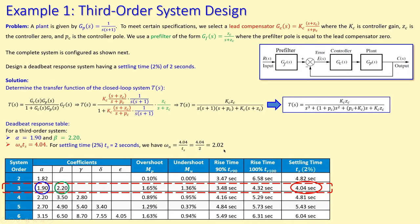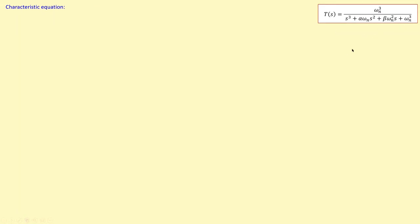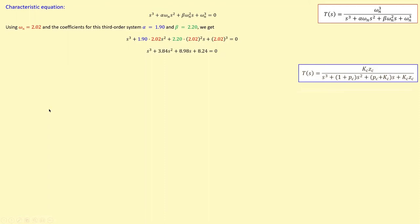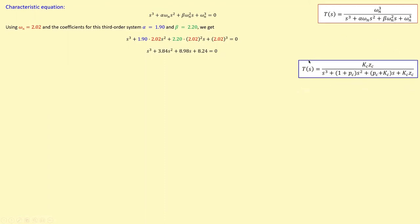The characteristic equation of the general third-order closed-loop transfer function is the denominator set equal to zero. Substituting α = 1.9, β = 2.2, and ωn = 2.02 and working out the expression gives a specific third-order polynomial. From the system's closed-loop transfer function, equating its denominator to zero gives the system's own characteristic equation.